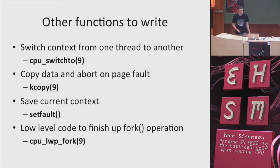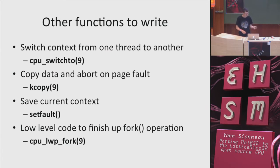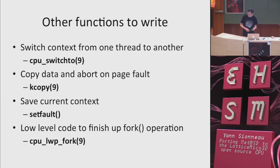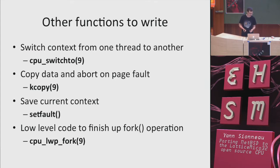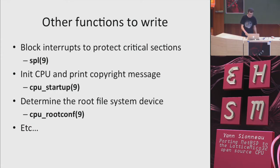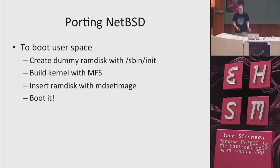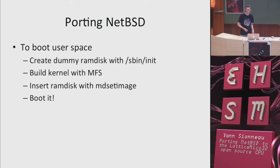There are many other machine-dependent functions to implement. For example: cpu_switch2 to switch from one context to another; copy-with-stop-on-page-fault; save context; and the low-level code finishing fork operations. All of these must be written for each architecture. Once all functions are implemented, you can build, test, run, and fix your kernel — but it's only the kernel booting. User space still needs work.